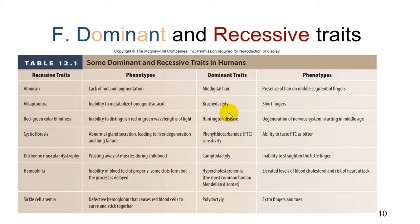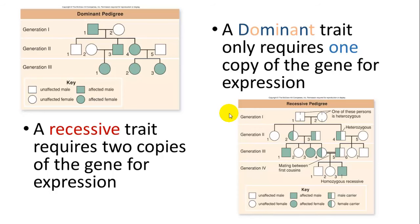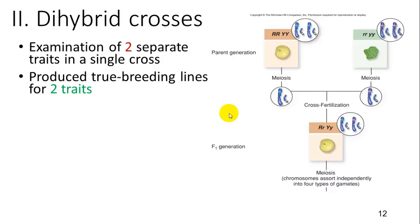Here are some dominant and recessive traits found in humans, which we'll talk about later. A dominant trait only requires one copy of the gene for expression, and a recessive trait requires two copies. Recessive traits are generally less represented in a population unless the dominant trait has an extreme disadvantage. If a dominant trait significantly reduces survival or reproduction, it will quickly be weeded out of the gene pool.